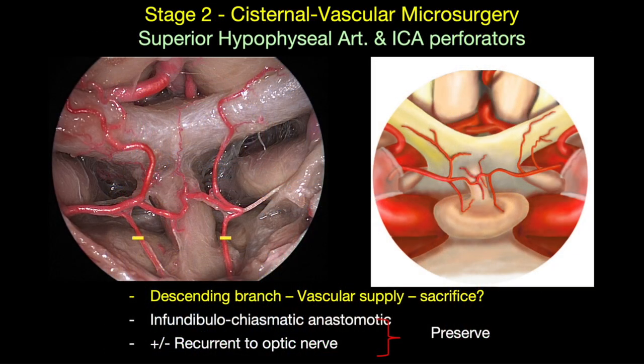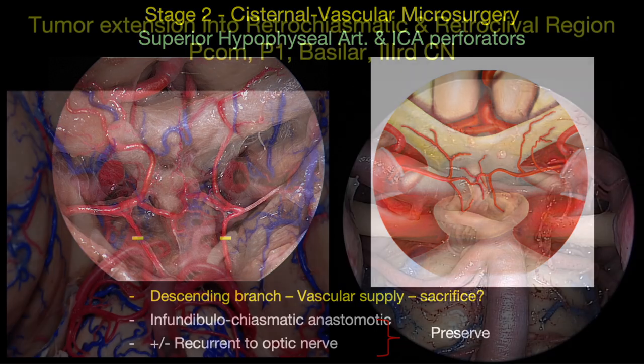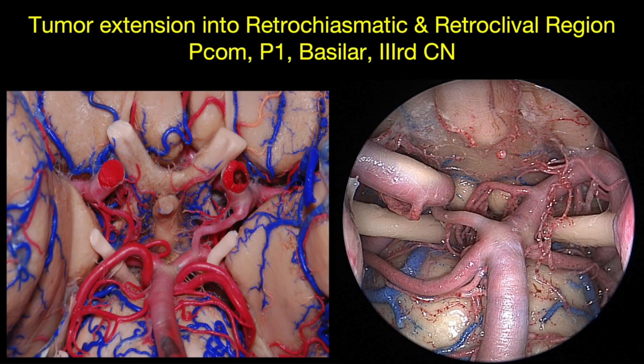Stage two involves dissection of the superior hypophysial arteries and their branches and the ICA perforators. As we go into the retrochiasmatic space, the posterior communicating artery becomes the most important branch to remember.